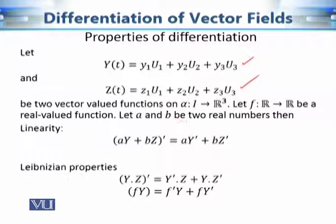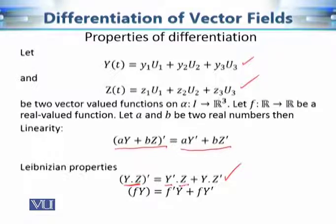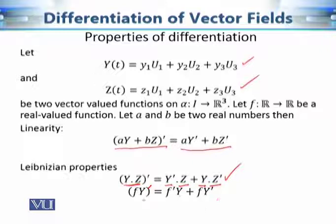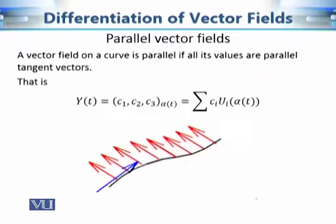There are several properties of differentiation of vector fields. The derivative of ay + bz equals ay′ + bz′ for real numbers a and b. The derivative of the dot product y·z equals y′·z + y·z′. Similarly, for the product of a vector field with a real-valued function f, the derivative follows the product rule: (fy)′ = f′y + fy′.